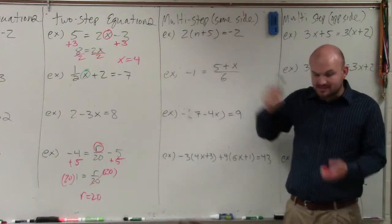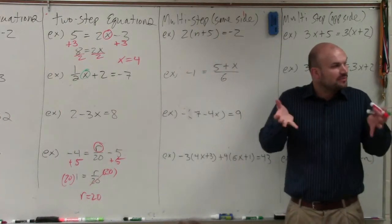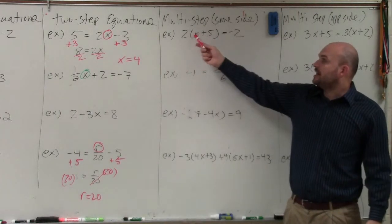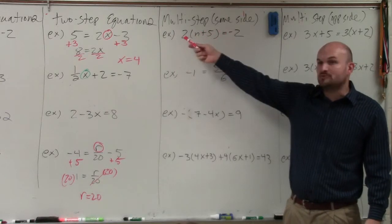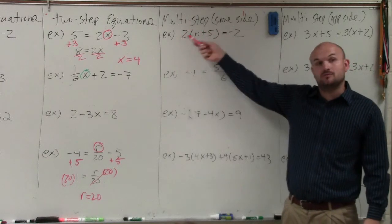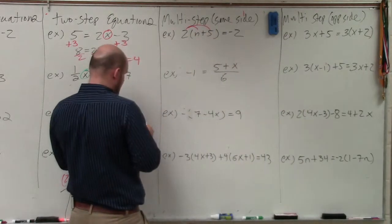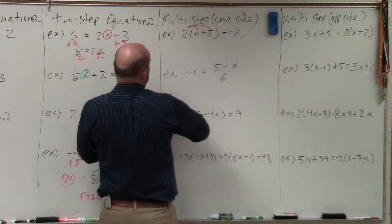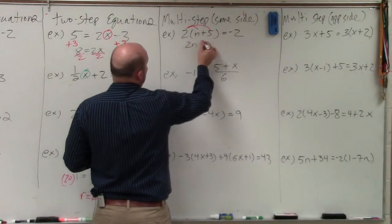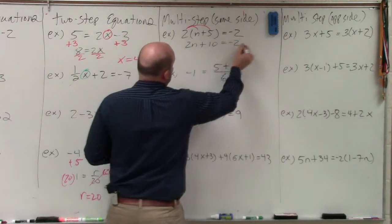So how do we eliminate the parentheses? Apply the operation that the parentheses are there for. It's grouping n plus 5 to be multiplied by 2. So let's multiply 2 times the quantity n plus 5. Apply the distributive property. When doing that, you obtain 2n plus 10 equals negative 2.